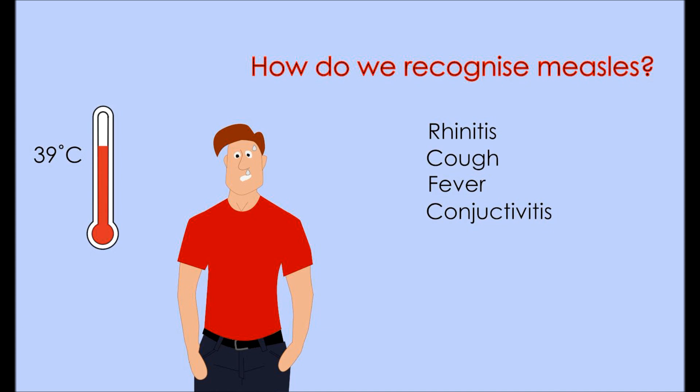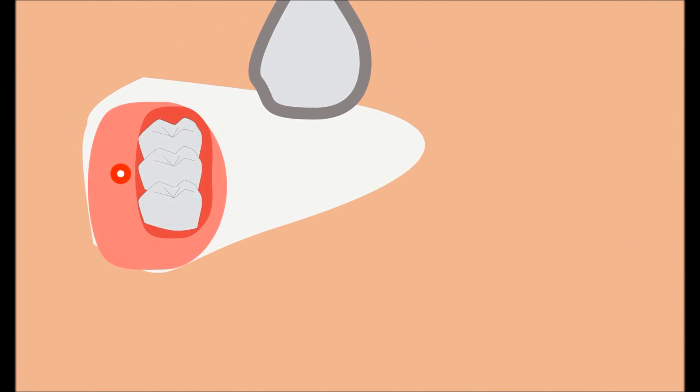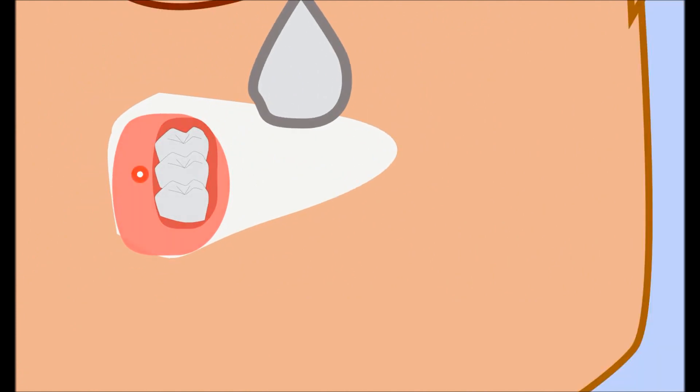A specific sign that doesn't necessarily appear is what's called the Koplik spots. This sign consists of red spots with a white dot on the inside of the cheeks facing the molars.